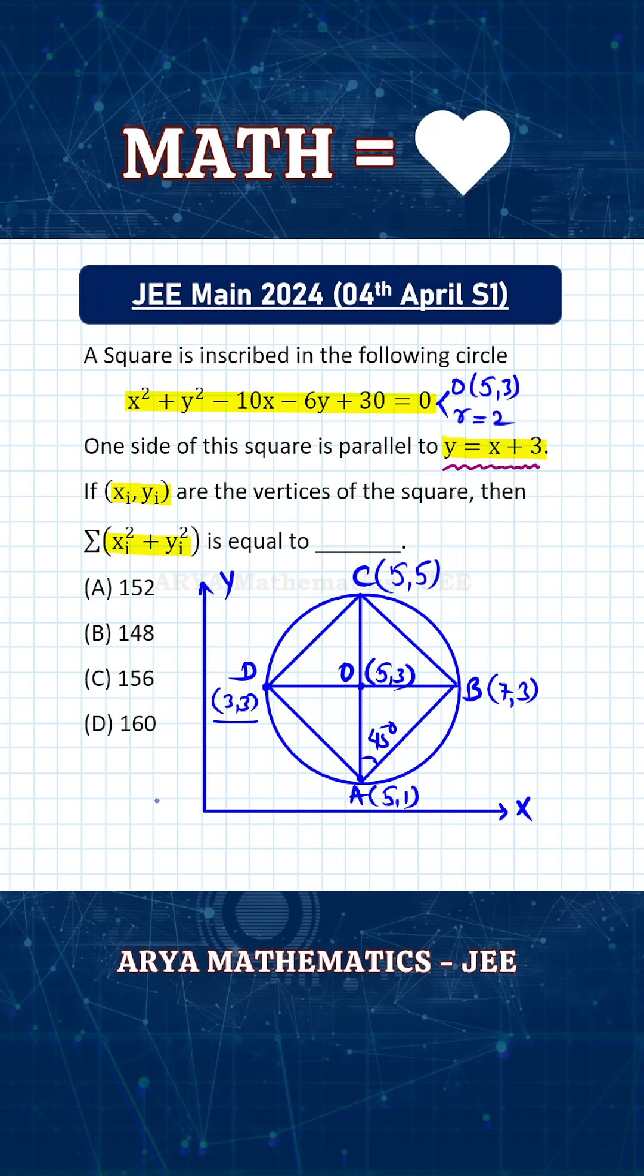These are the coordinates of the vertices. Now you can calculate Σ(x_i² + y_i²). When you do the calculation, you'll find that the value is 152, and therefore the right answer for this problem is the first option.